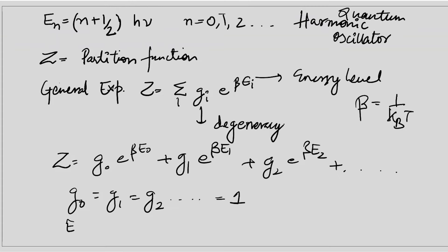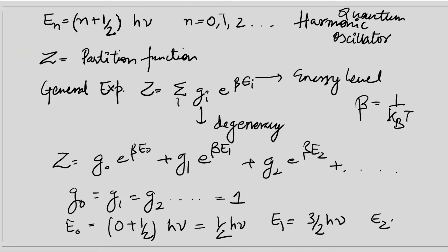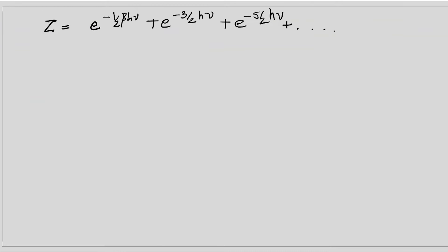We find the energy levels: E_0 equals 0 plus half times h-nu, giving us (1/2)h-nu. For n=1 it is (3/2)h-nu, and E_2 is (5/2)h-nu. We simplify Z by factoring out e^(negative half beta h-nu), leaving the expression 1 plus e^(negative beta h-nu) plus e^(negative 2 beta h-nu) and so on.